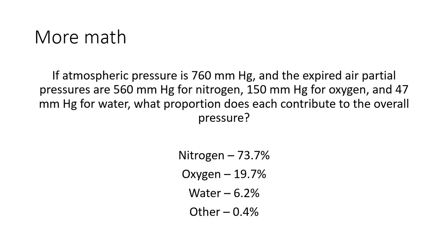So the answers are these. And so the way that we did that for nitrogen, we just went 560 divided by 760. And that equals that number there. And we did 150 divided by 760 to get the 19.7, and so on and so forth. So that's Dalton's law.